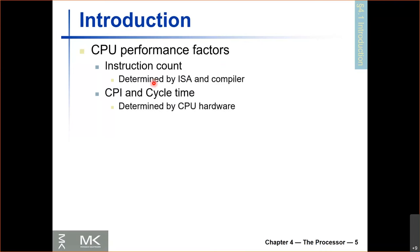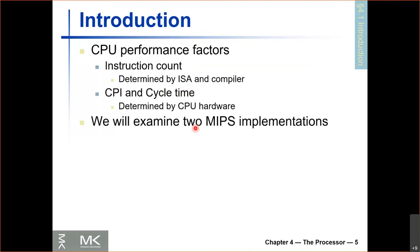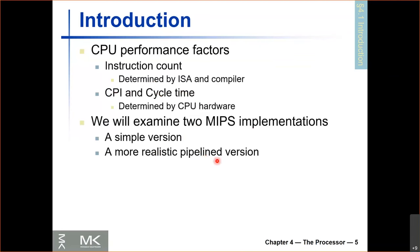What we are about to cover impacts CPI and cycle time. CPI and cycle time depend on how the actual hardware is implemented, and that's what we're going to look at today. We're going to look at two different MIPS implementations. We'll start with a simple version today, and then in a few lectures we'll look at a more optimized version using a technique called pipelining, which is very important in reducing CPI and cycle time. We'll see how two different microarchitectures for the same ISA result in different CPIs and different cycle times.